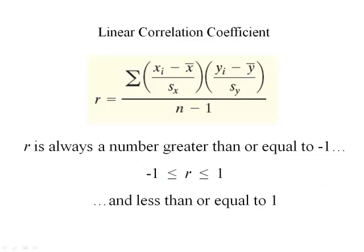It turns out that r is always going to be a number between negative 1 and 1. So it can be as small as negative 1, it can be as big as positive 1, or it's going to be any number in between.